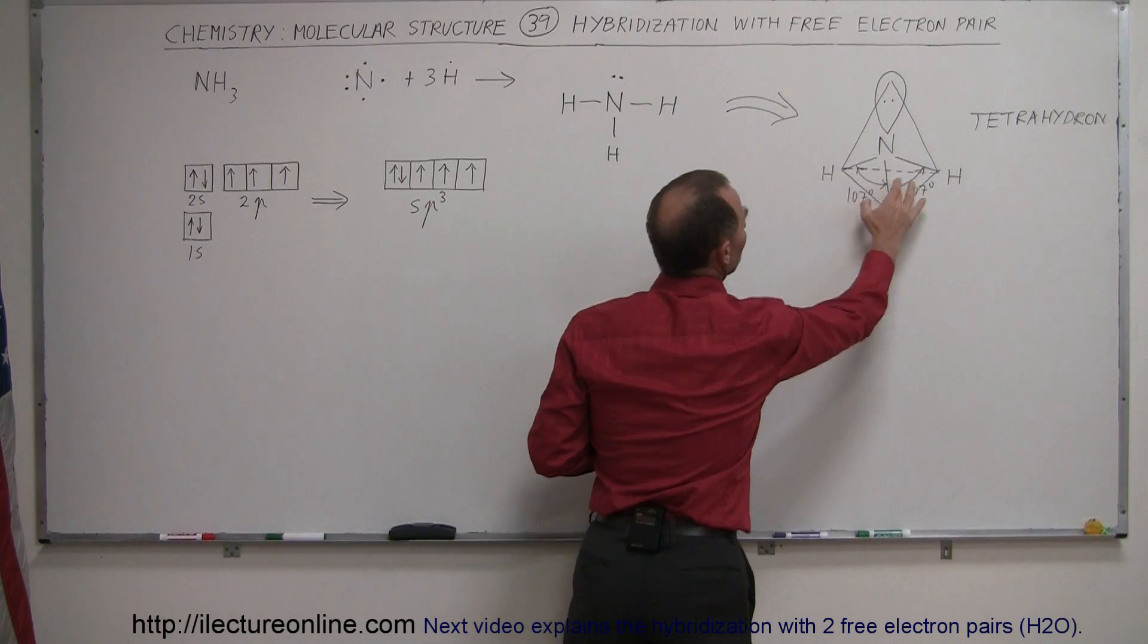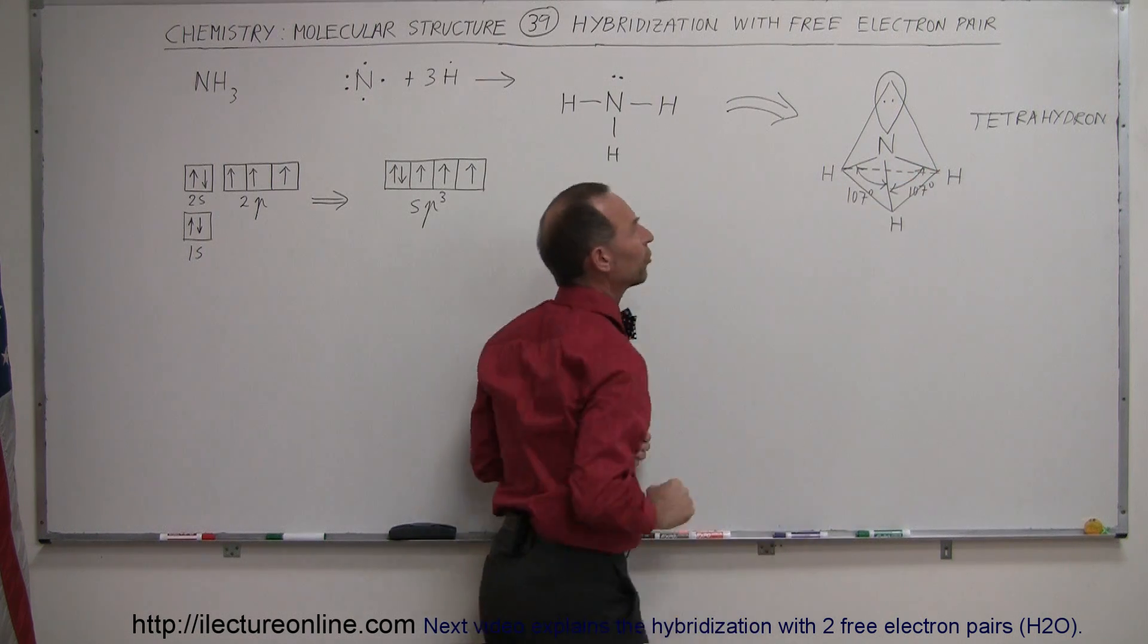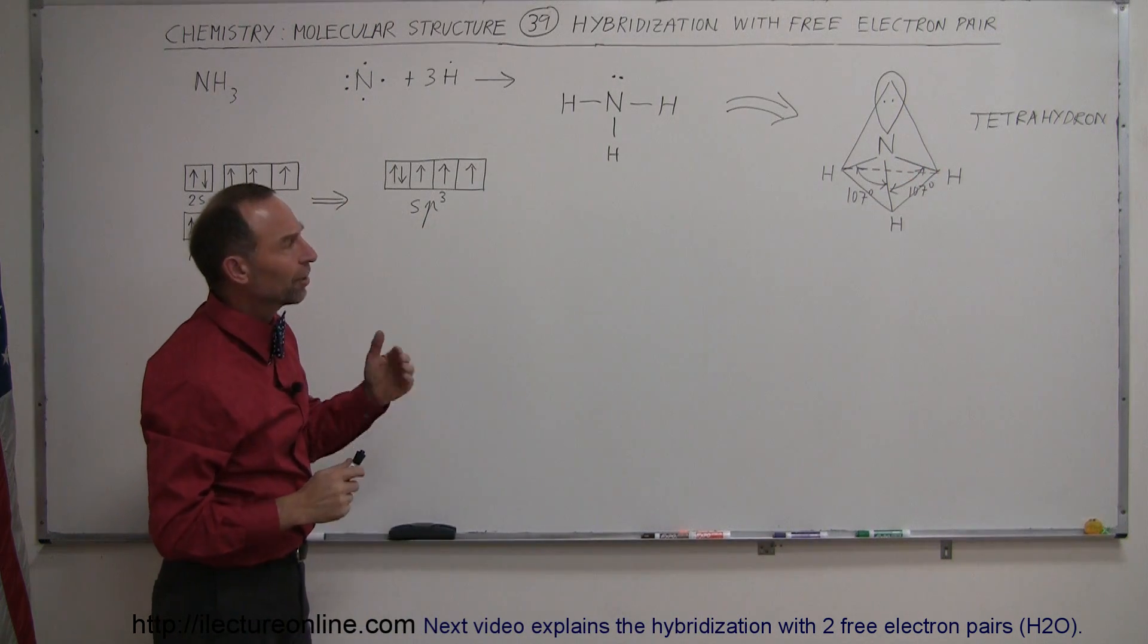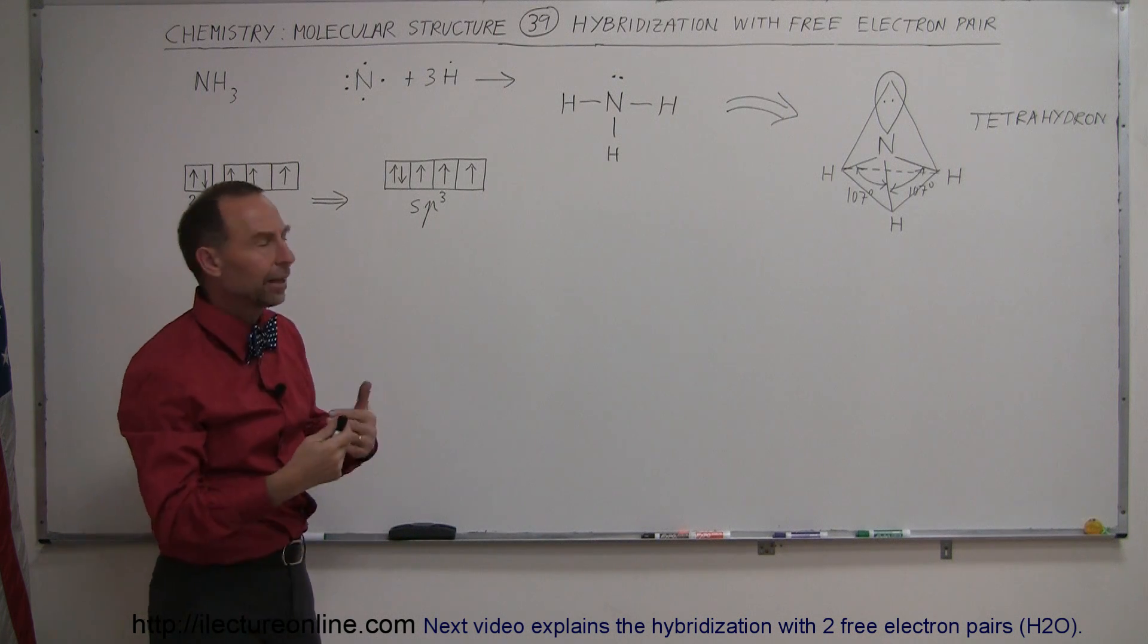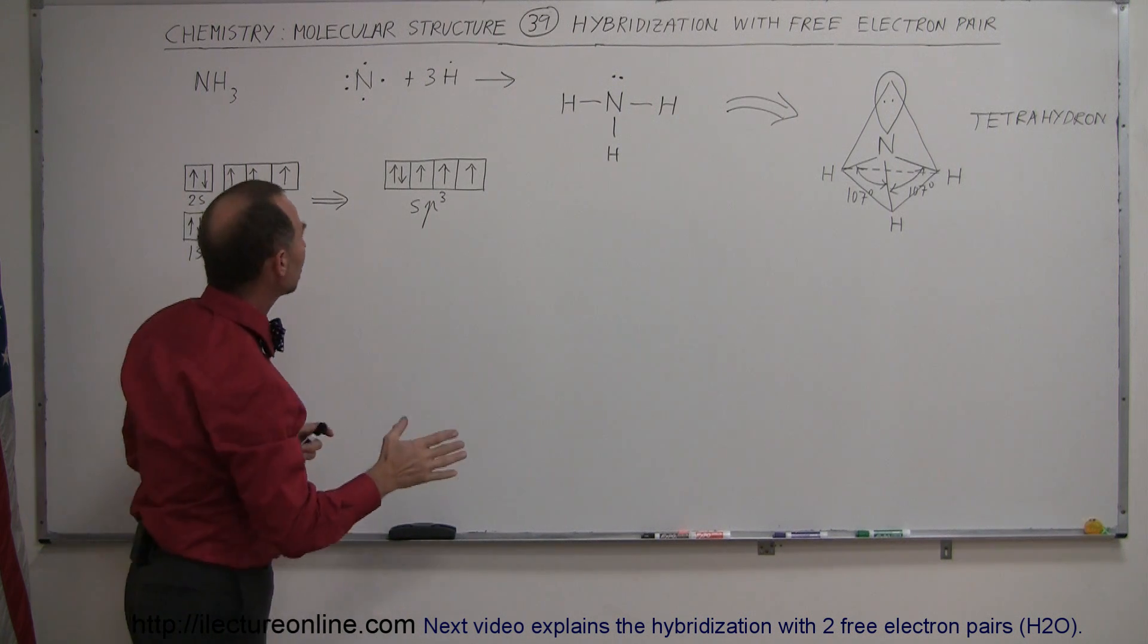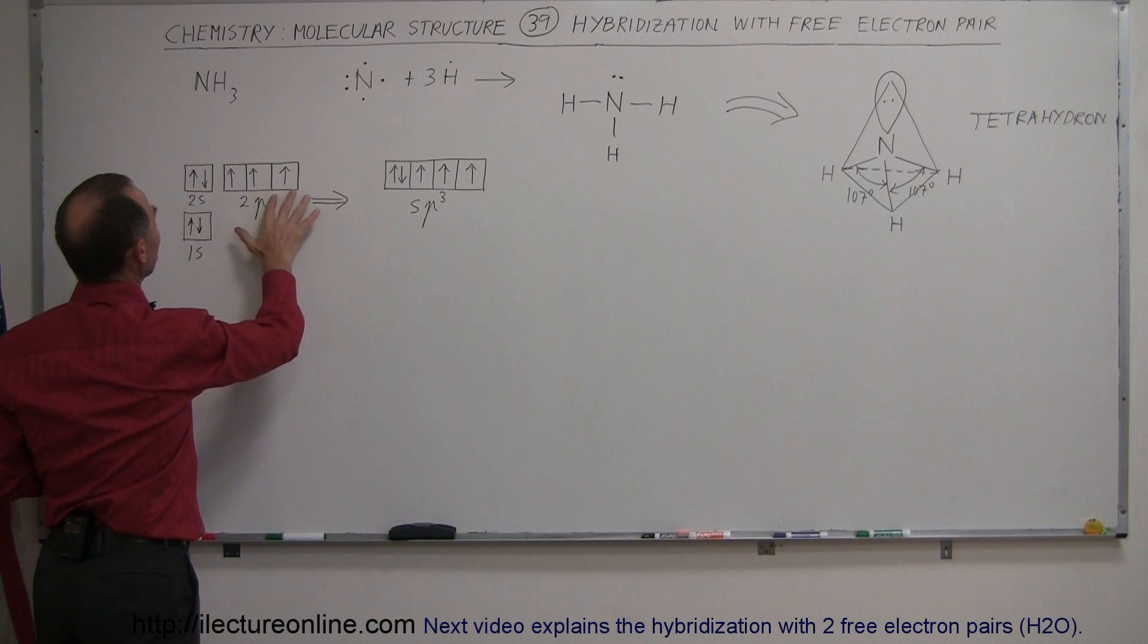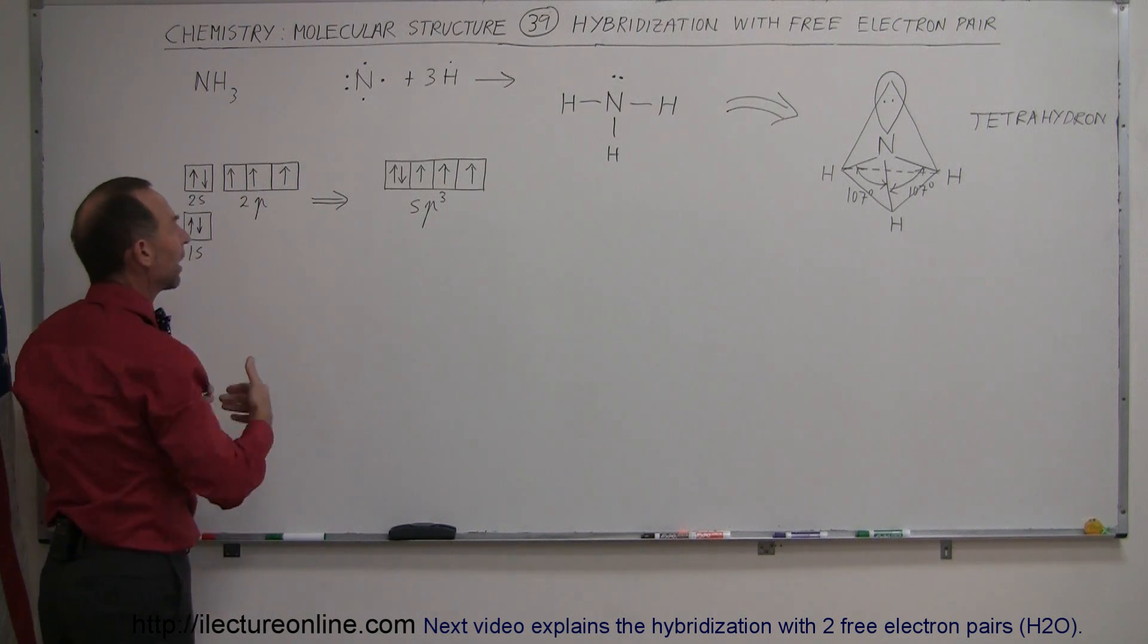Notice that these three bonds, those three bonds between nitrogen and hydrogen, they're all identical in shape, in length, in strength, and that would not normally come from a situation like this. So therefore, how is that accomplished?